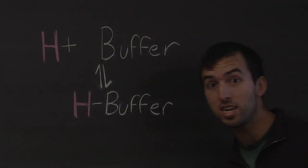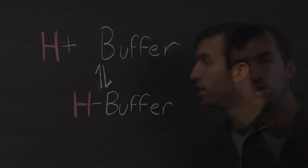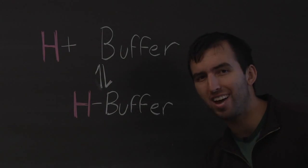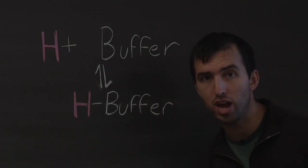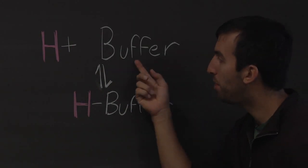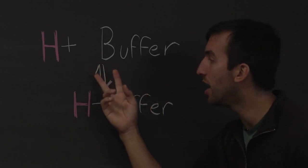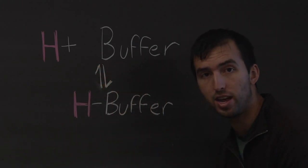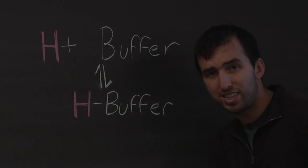So now what exactly is a buffer? Well remember that an acid releases a lot of extra hydrogen ions. So there's all these hydrogen ions floating around. Now what a buffer does is it can actually absorb some of those hydrogen ions and grab onto them, and therefore making the solution slightly less acidic.